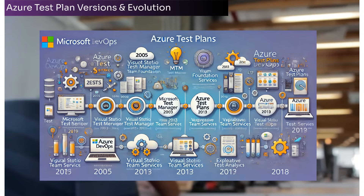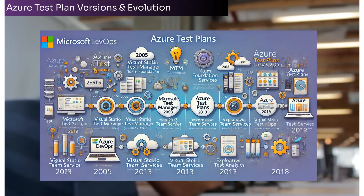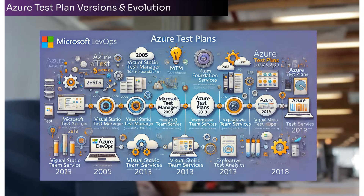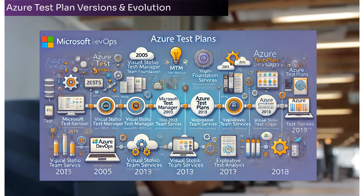The next phase was the transition to the cloud with Visual Studio Online, between 2013 and 2018. Microsoft began offering a cloud-based alternative to TFS called Visual Studio Online, which later became Visual Studio Team Services (VSTS). VSTS included testing capabilities similar to MTM, focusing on improving scalability and cloud access for distributed teams.